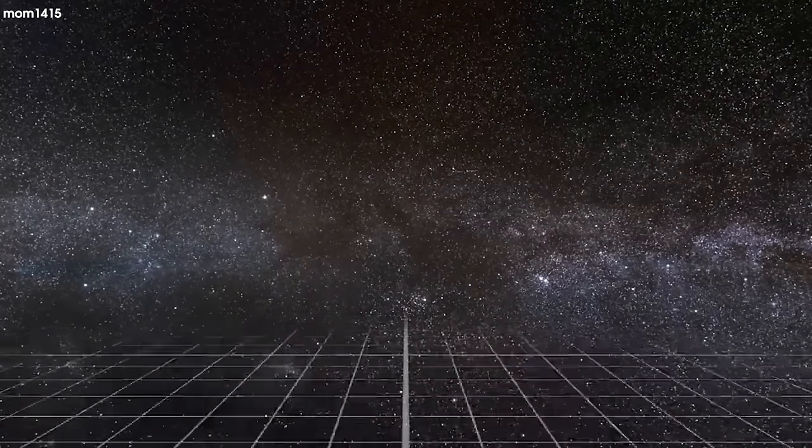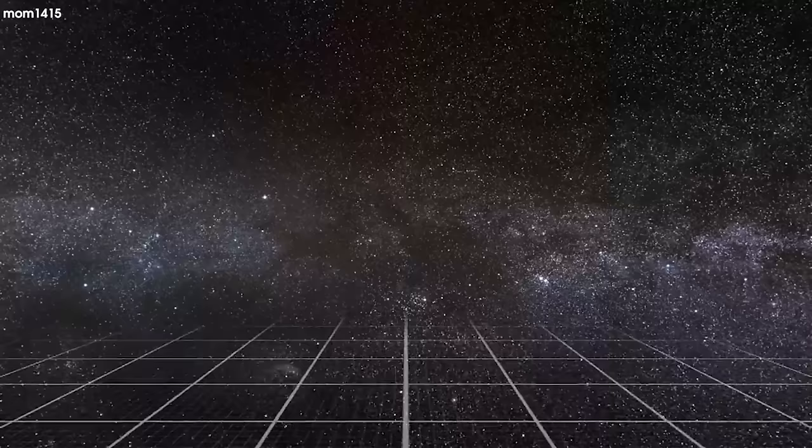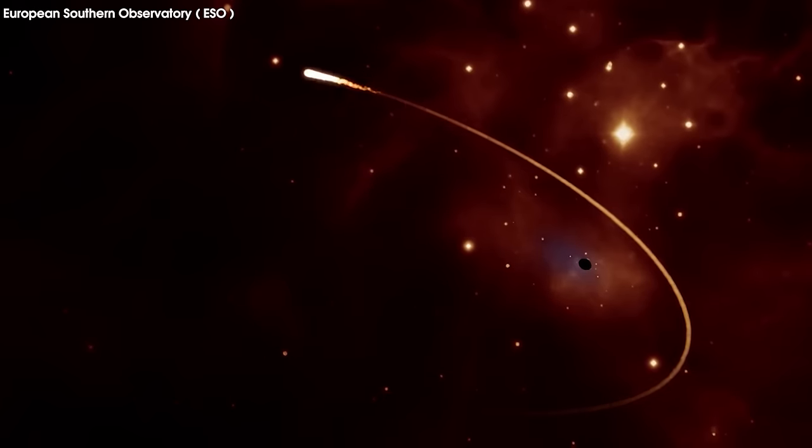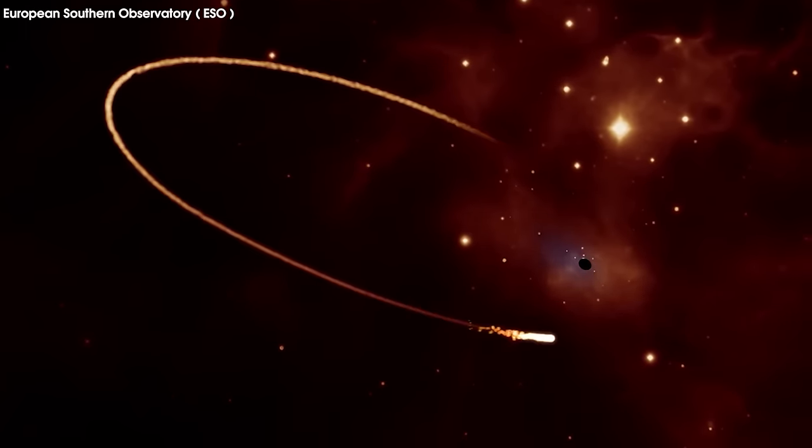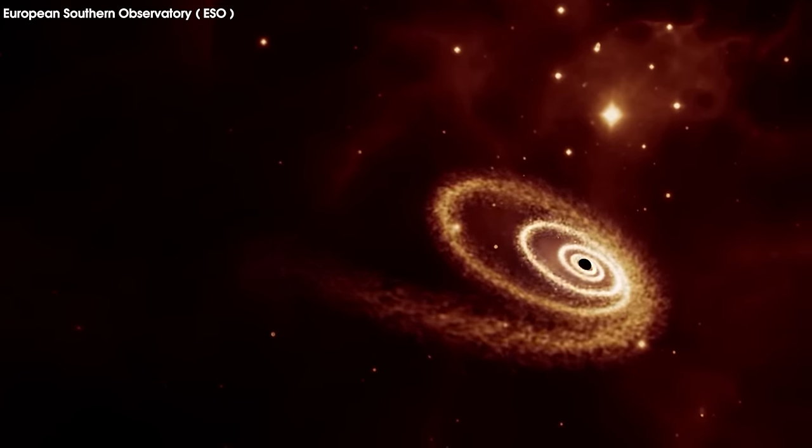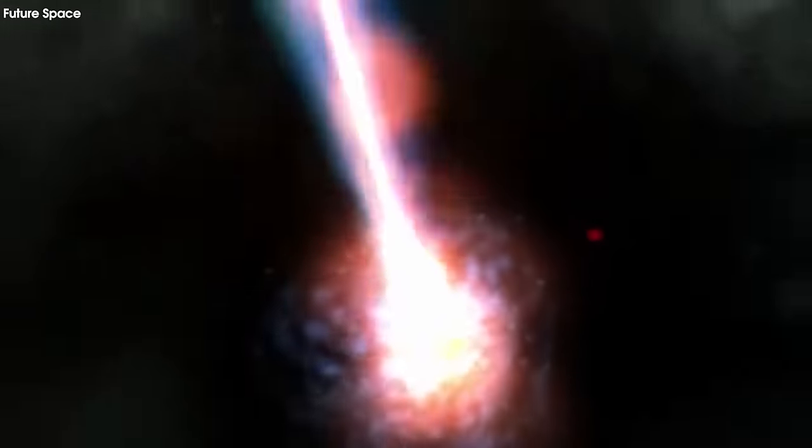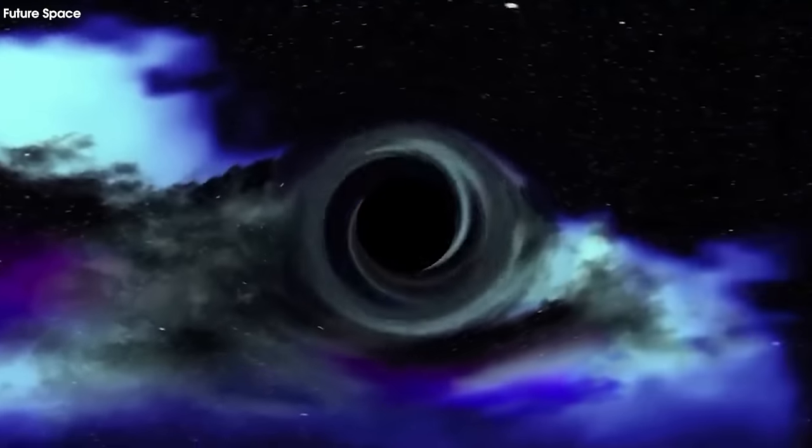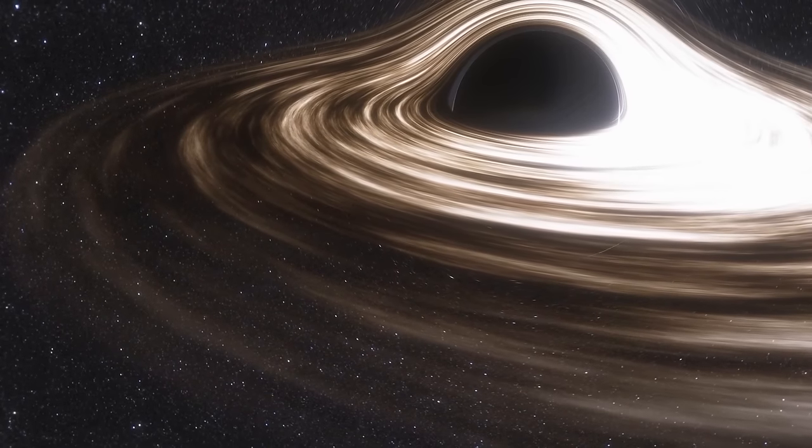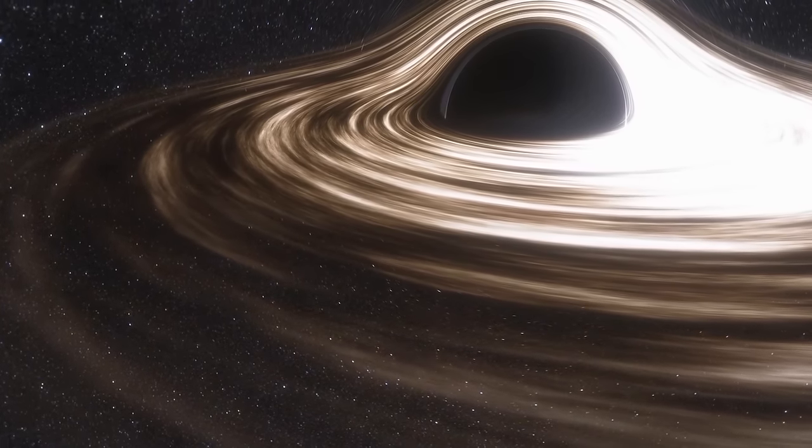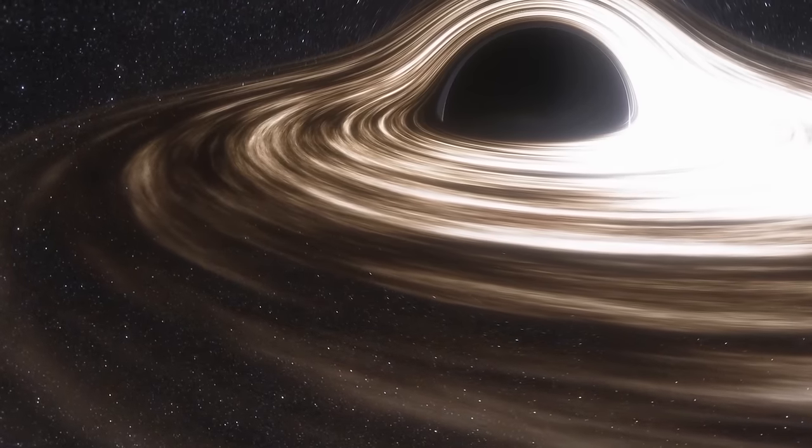In other words, black holes are like the ultimate A-listers of the universe and scientists are the paparazzi trying to snap a picture of them. But it's no easy task. There are many obstacles they face in understanding these elusive celebs, including limited observations. Black holes are notorious for keeping a low profile, emitting no light or radiation. Scientists need to use indirect methods, like observing the behavior of nearby stars and gas, to figure out if a black hole is lurking in the shadows.